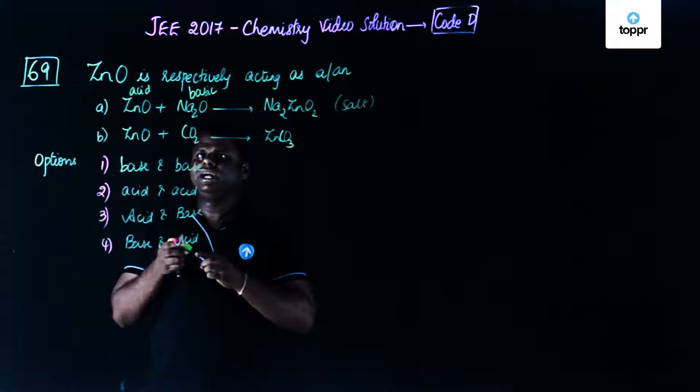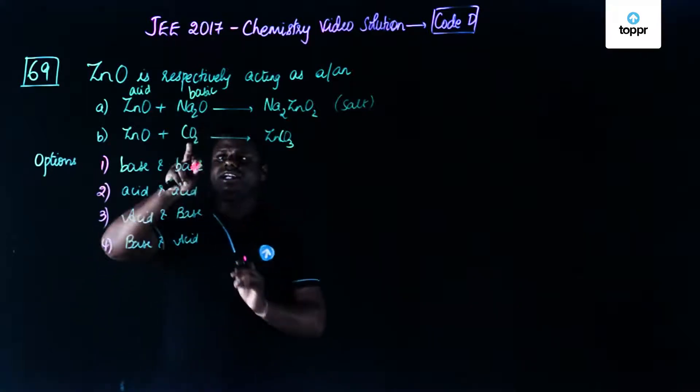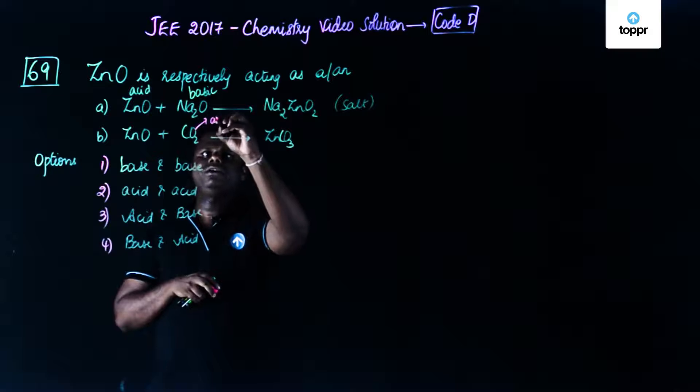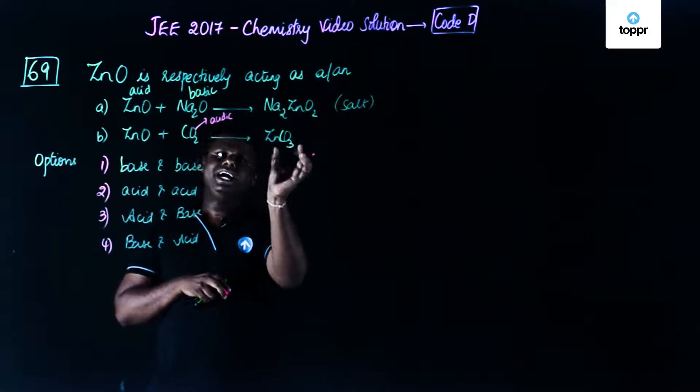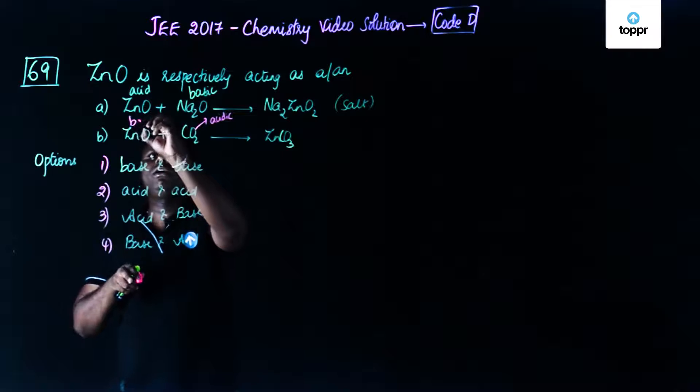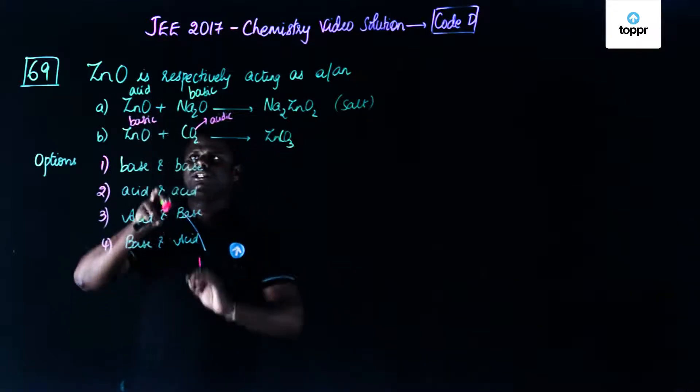Now let's have a look at the other one. Carbon dioxide is normally an acidic oxide. Carbon dioxide is normally an acidic oxide and zinc carbonate is again a salt. Acidic oxide should react with a basic oxide in order to form a salt.